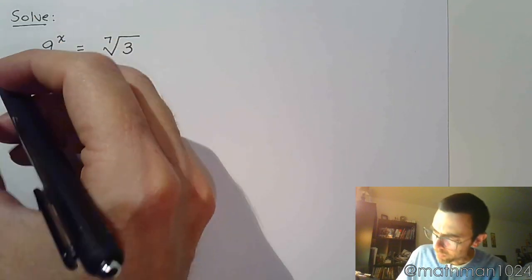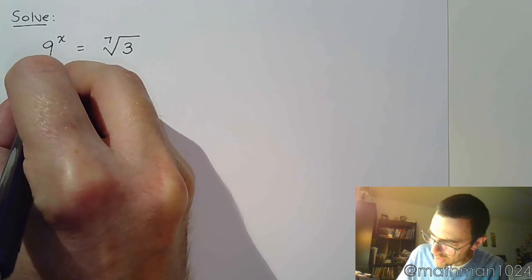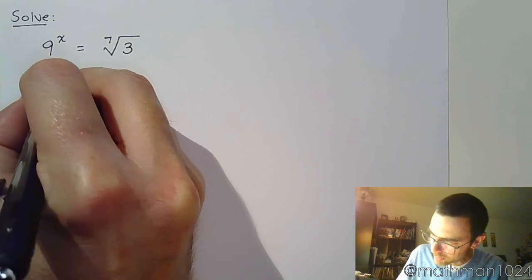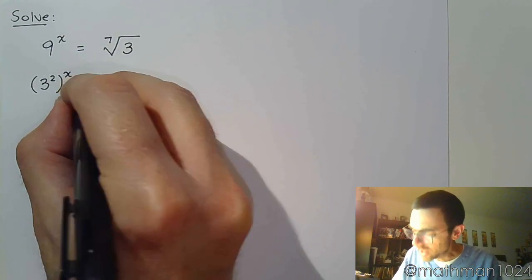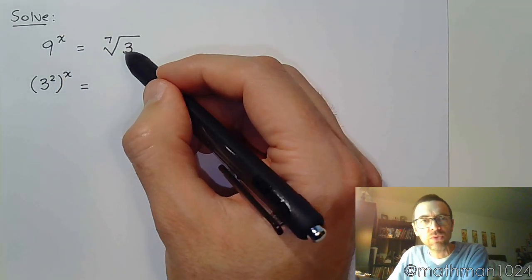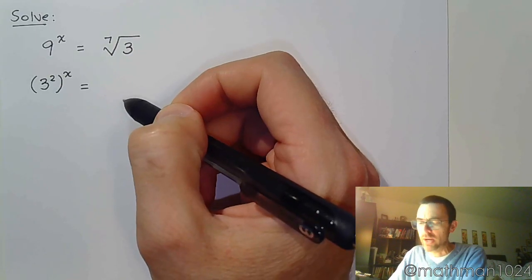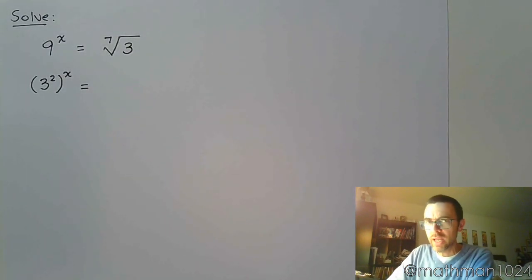So let's do that. Rewrite 9 as 3 to the second power raised to the x. And on the right side, you've got to remember how to rewrite something like this. How do we rewrite radicals? Well, in case you have forgotten...